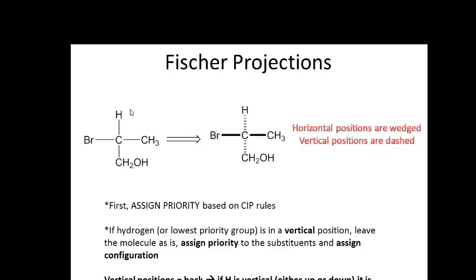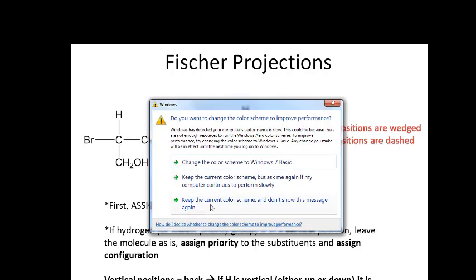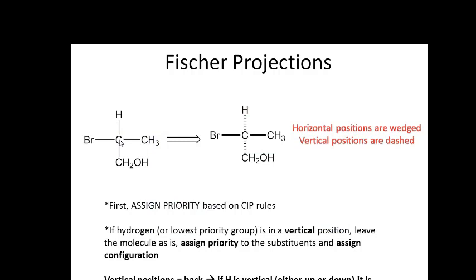In a Fischer projection, carbon is tetrahedral, and you are looking at the carbon from the top. The horizontal lines are wedged, meaning they come out of the page toward you, while the vertical lines are dashed, meaning they go back into the page. Understanding this is key to assigning configuration to a Fischer projection.